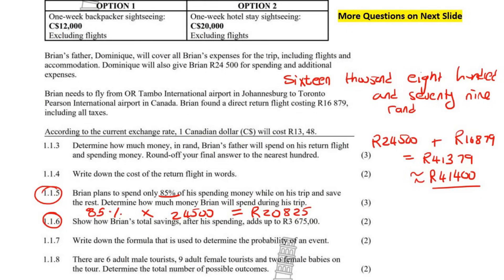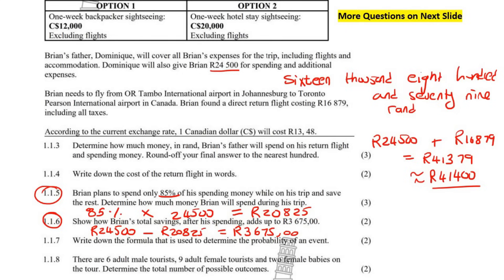The next question says: show how Brian's total savings adds up. The dad gave him 24,500 Rand and he only spent 20,825. So if we subtract those two values: 24,500 minus 20,825 equals 3,675 Rand. That's how much he saves after the trip.